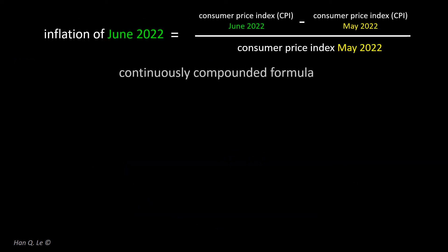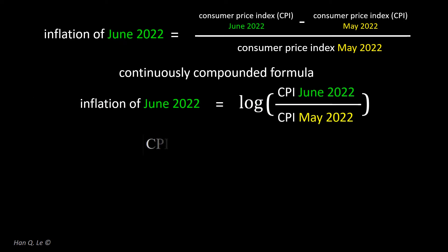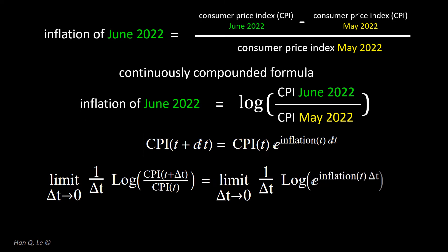A more common formula for inflation is the continuously compounded formula. The formula is based on the exponential function definition of inflation. Both formulas yield comparable results as long as the rate of inflation is small over the time interval, which is one month in the US.